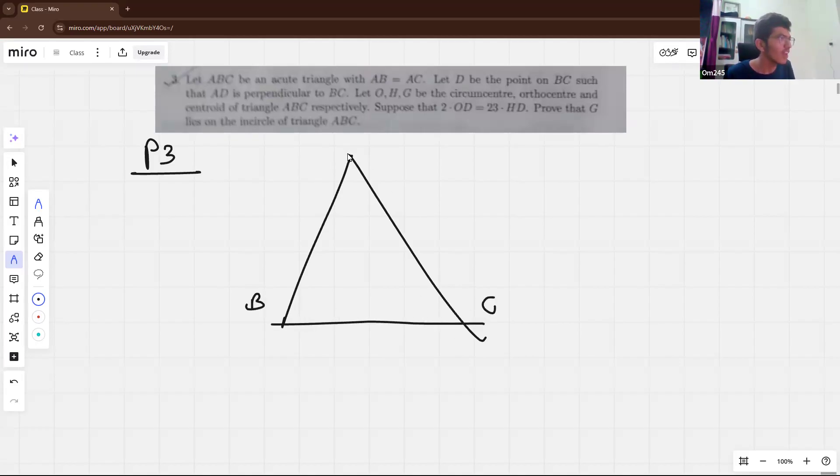So we have isosceles triangle. So D will be actually the midpoint of BC. Then we will draw O, H, G some way. And because this is the isosceles triangle, they all will lie on the same line. So suppose O is here, G is here and H is here.